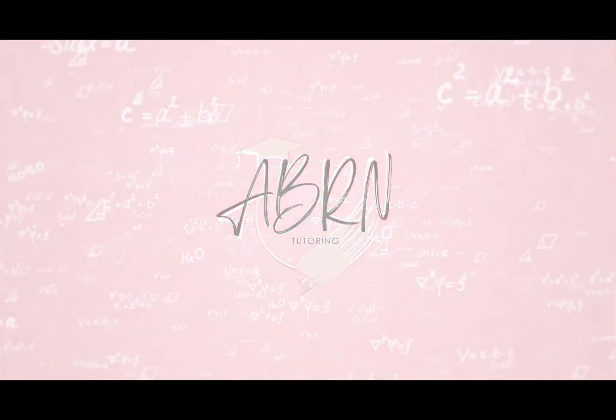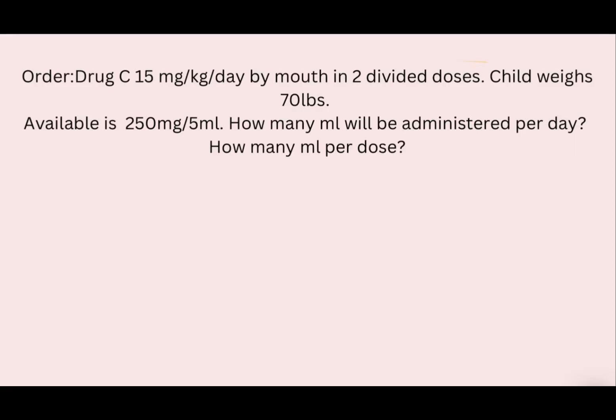Hey, it's Blessed RN, and I'm coming to show you the difference today between 'day' versus 'dose.' The drug order is 15 milligrams per kilogram per day by mouth in two divided doses. The child weighs 70 pounds, and the available concentration is 250 milligrams per five milliliters. This is a two-part question.